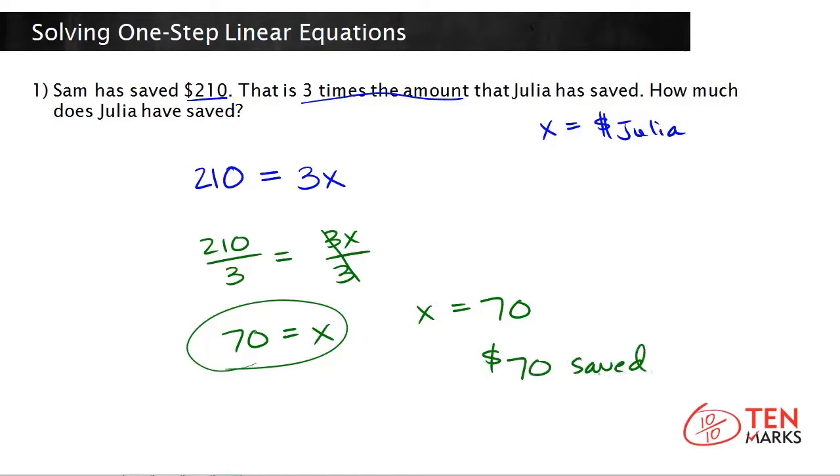And you know this is correct, because you could check this. You know that Sam has three times the amount that Julia has. And three times 70 equals 210, and that's what Sam has. So, you know you got the right answer. Let's try another problem together.